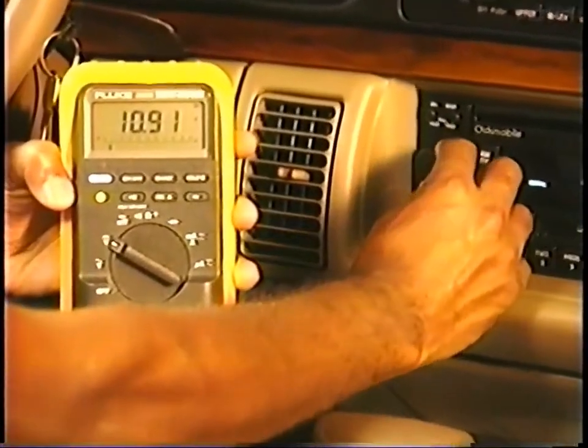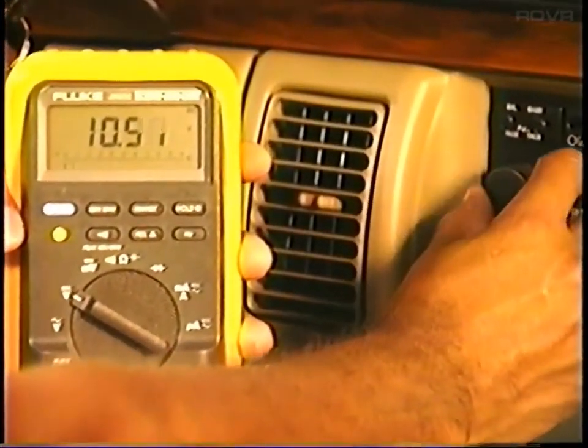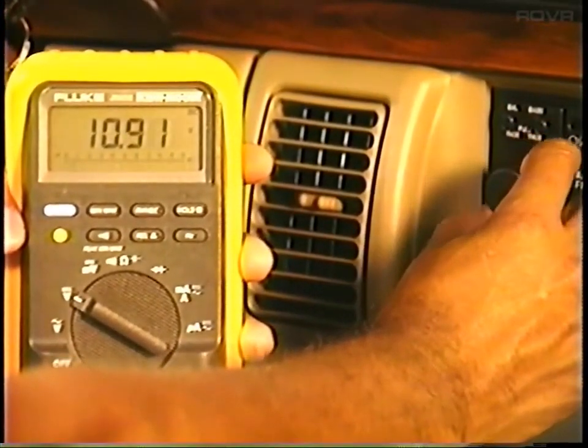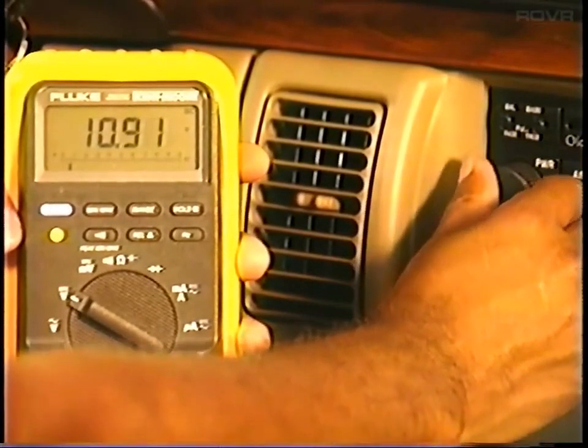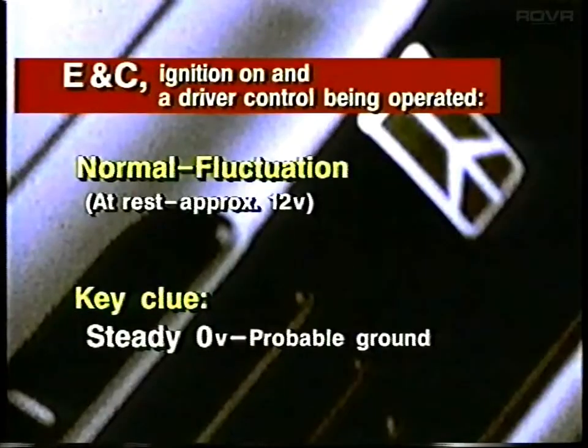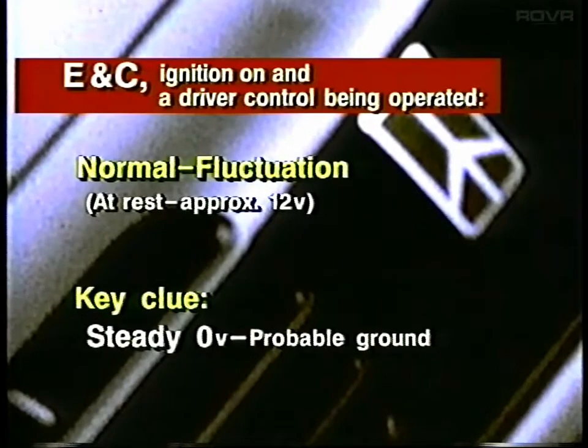When you do operate a control, such as the radio volume control, you should see fluctuation, and the range of fluctuation will be higher than with the other buses because of that 12-volt high. A steady zero volts, as with the other buses, would indicate a probable ground — though as always, it could indicate an open between the DLC and the rest of the system. The main trick with diagnosing any vehicle system is understanding how it works. With serial data lines, that can be tricky, but if you try to solve a bus problem without understanding it, you're playing by chance with much worse odds. So if you're not already an expert on buses, now is the perfect time to get on board.